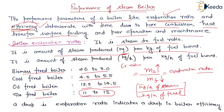A drop in evaporation ratio indicates a drop in boiler efficiency — we are using more fuel but steam generation is less. In that case, losses are more, meaning the efficiency of the boiler is also less.